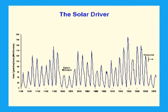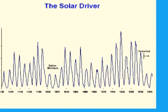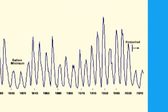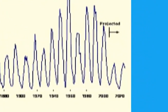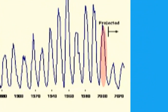We are currently near the end of solar cycle 23 — this is this one. When solar cycle 23 ends is very important, as we will see in the next few graphs.